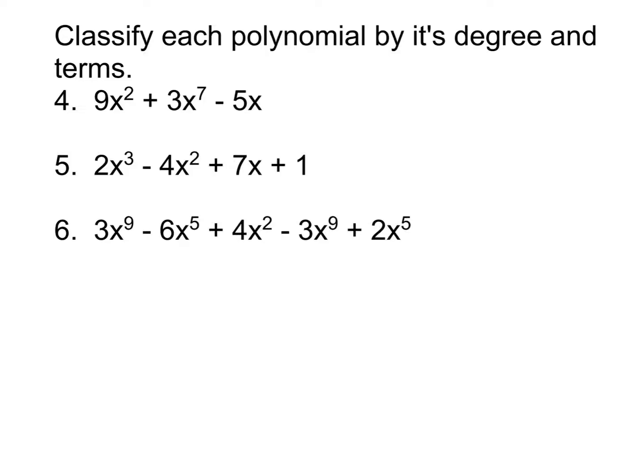For number four, we first need to get our degree. Remember, that's the highest exponent. In the case of number four, our highest exponent here is seven. It's not at the start in this case. It's in the middle. That's why we got to check all of them. So this one's degree seven. Degree seven is just degree seven. There's no special fancy name for that one. And how many terms are there? Well, terms are separated by addition and subtraction. So there's three of them, which means it is a degree seven trinomial.